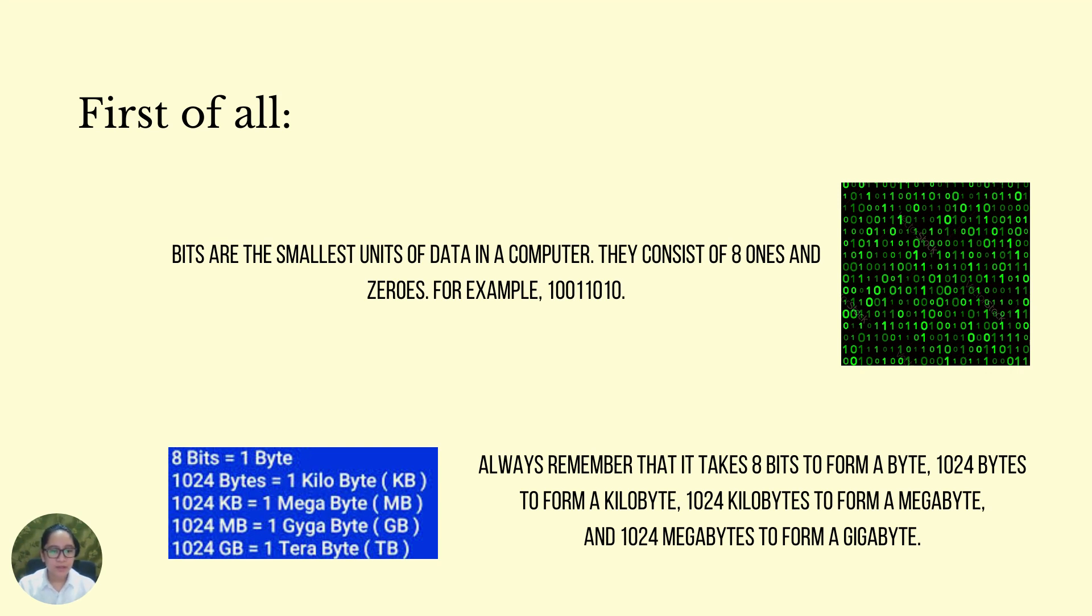First of all, bits are the smallest units of data in a computer. They consist of eight ones and zeros. For example, this one right here: 10011010.